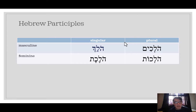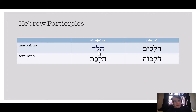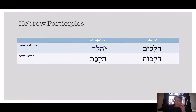The key to the Hebrew participle in this stem is this HOLM after the first letter. In Hebrew, there are some vowels that go long, go short — pick a length and go with it. But then there are other vowels that are historically long, and this HOLM is one of them. It can be written with a Vav or without a Vav — defectively, as it were. It doesn't matter. But the key is that the participle will have a HOLM after the first letter.